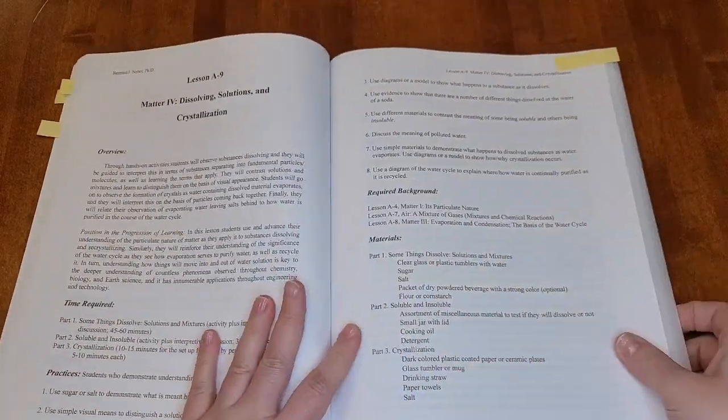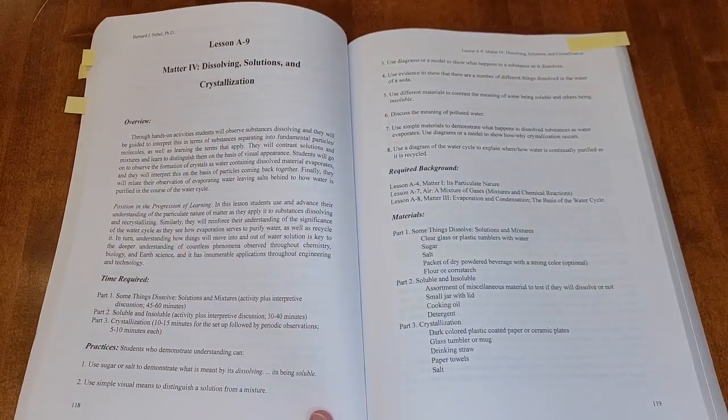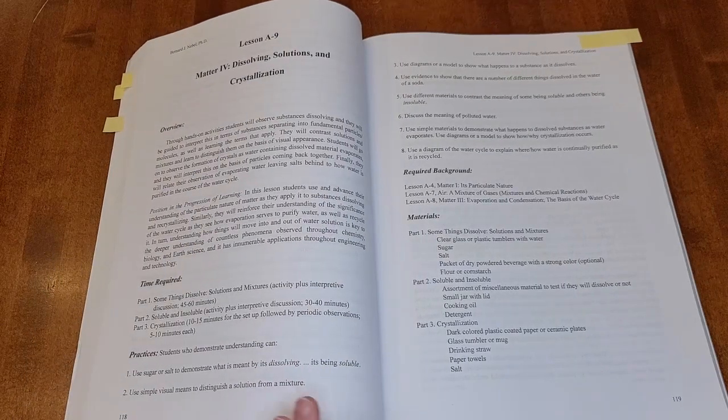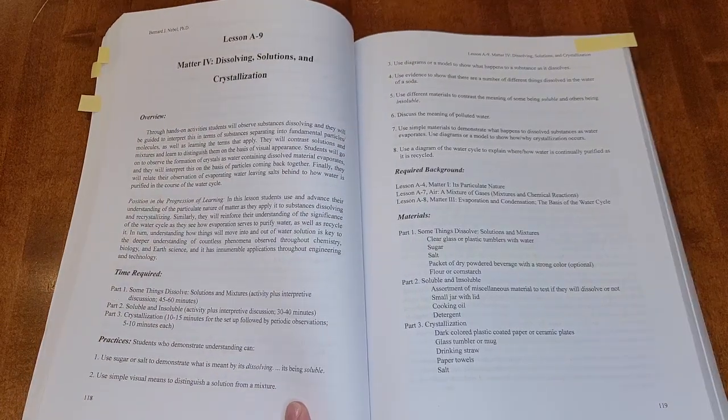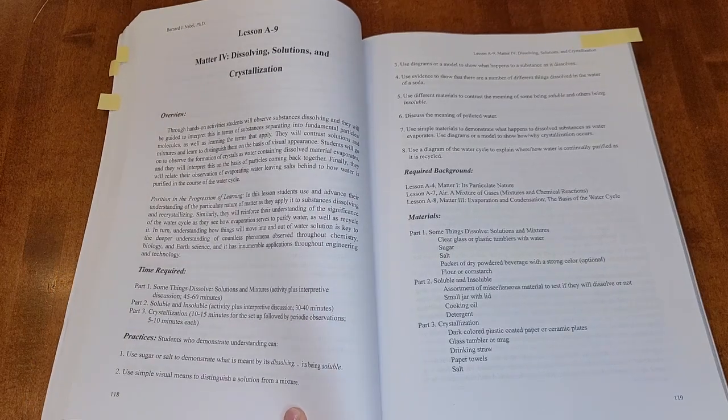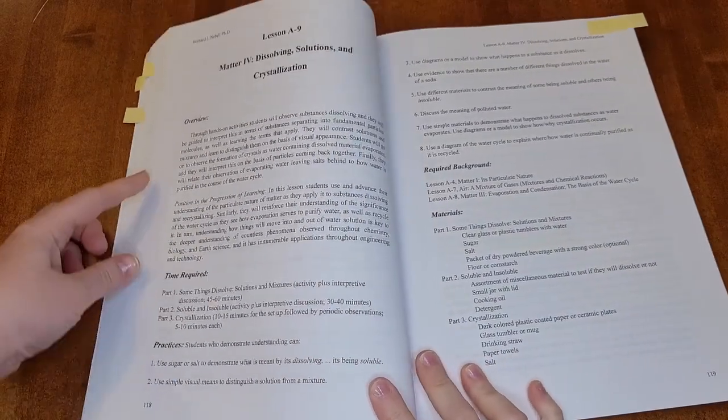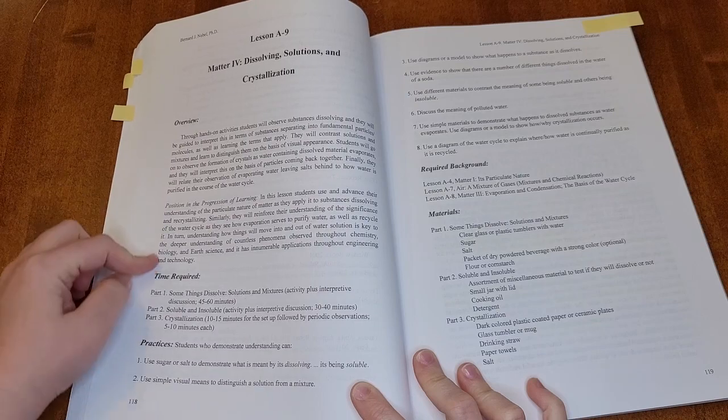All right, so let's look at how one of the lessons is laid out. This is lesson A9, so it's towards the end of the lesson progression in this book. We just did this lesson fairly recently. Every lesson has an overview section to tell you what's going on in the lesson.